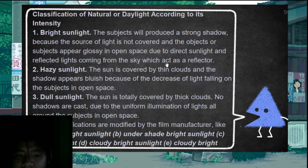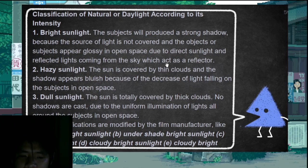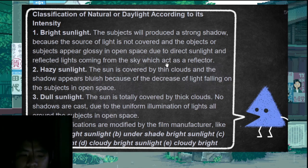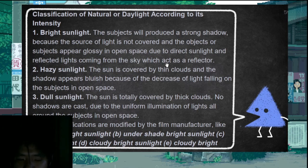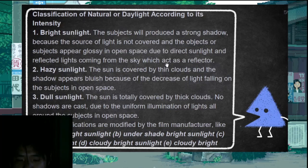There are types of natural lighting produced by the sun. Bright sunlight produces strong shadows — the shadow is very dark. Hazy sunlight is when the sun is covered by thin clouds, producing a slightly bluish surrounding. Dull sunlight is when the sun is totally covered by thick clouds — no shadow forms due to uniform illumination. There is also open bright sunlight, under-shade bright sunlight, hazy sunlight, cloudy bright sunlight, and cloudy sunlight.